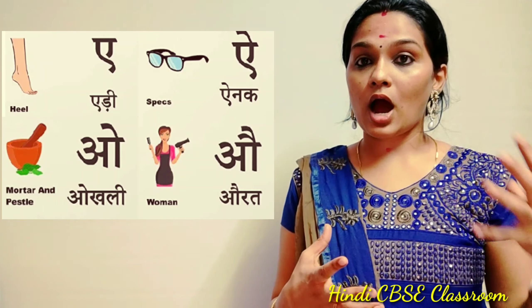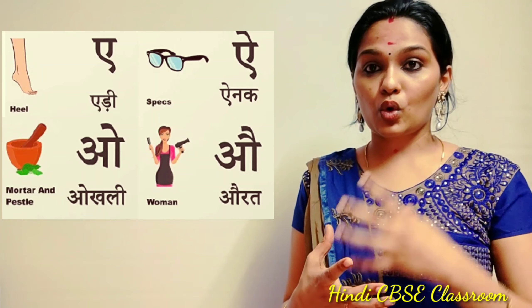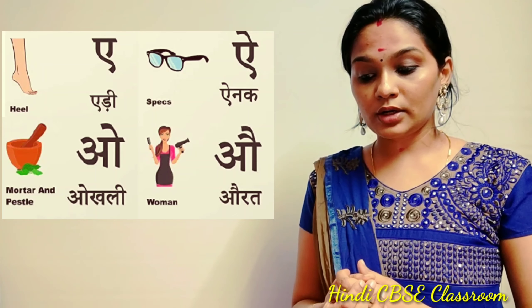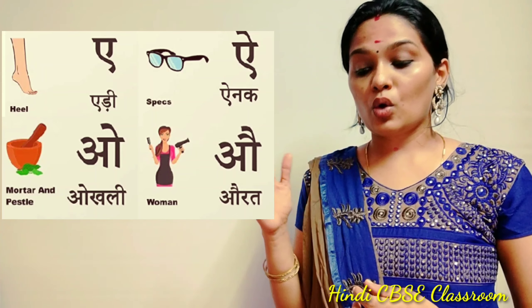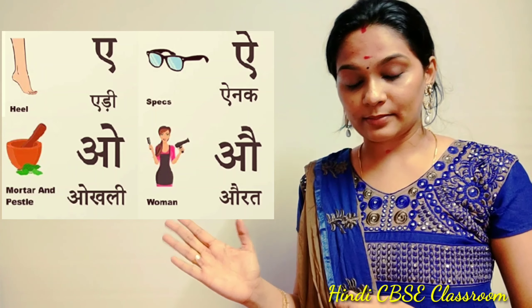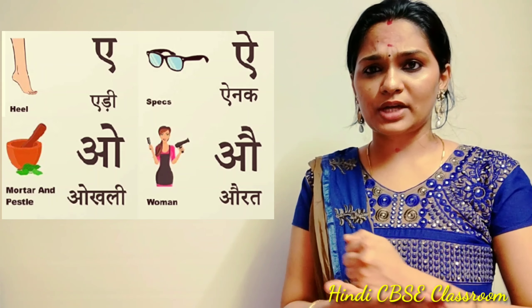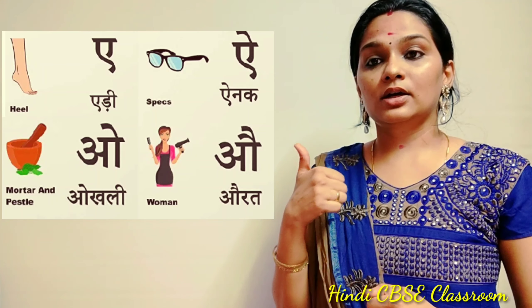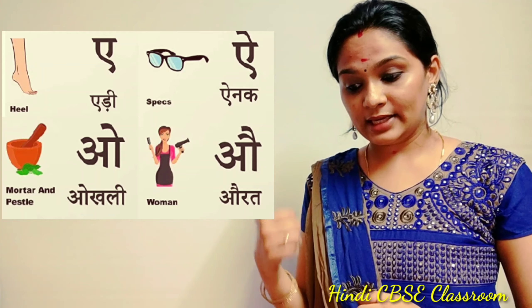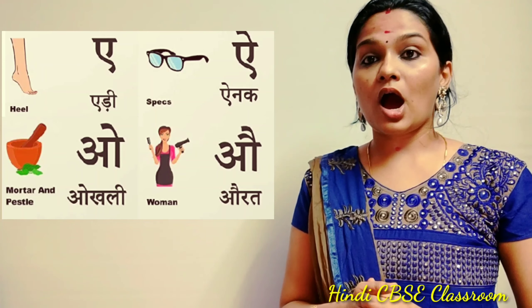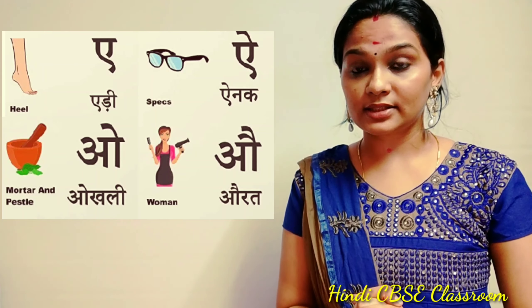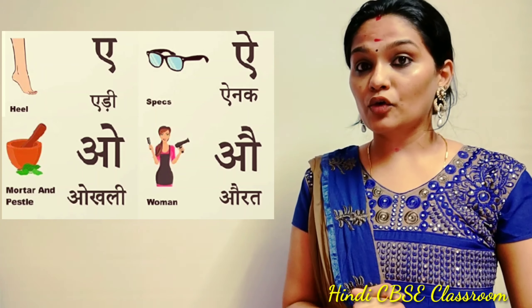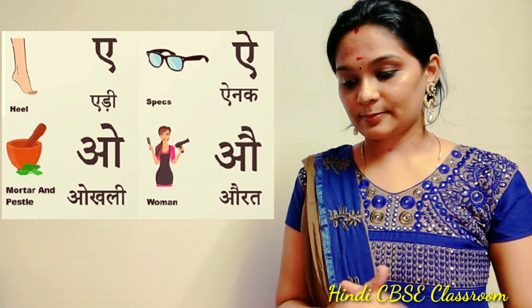Then comes O and Au. O for Oakley — that is the grinding stone. Au for Aurad, that is a woman.